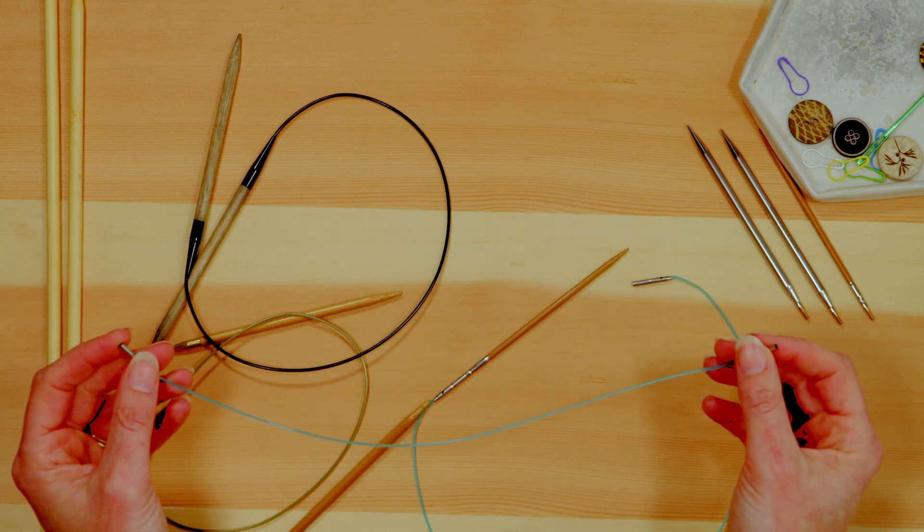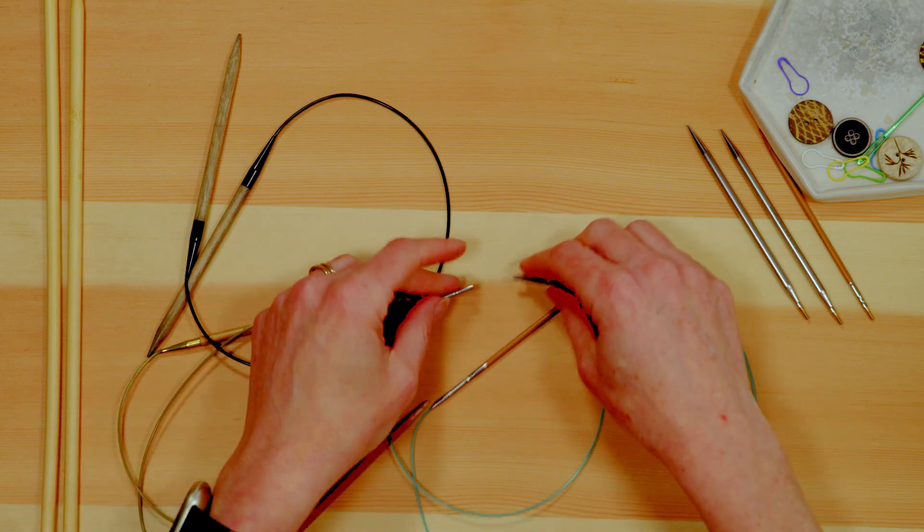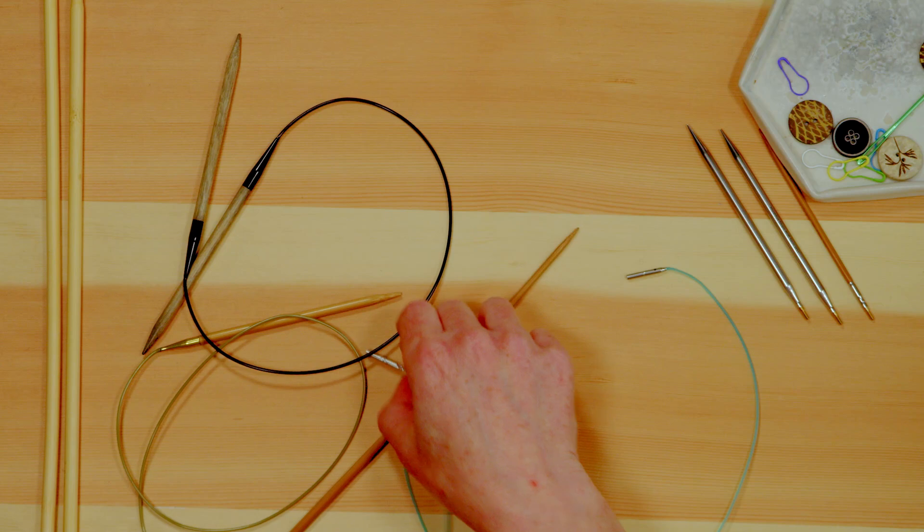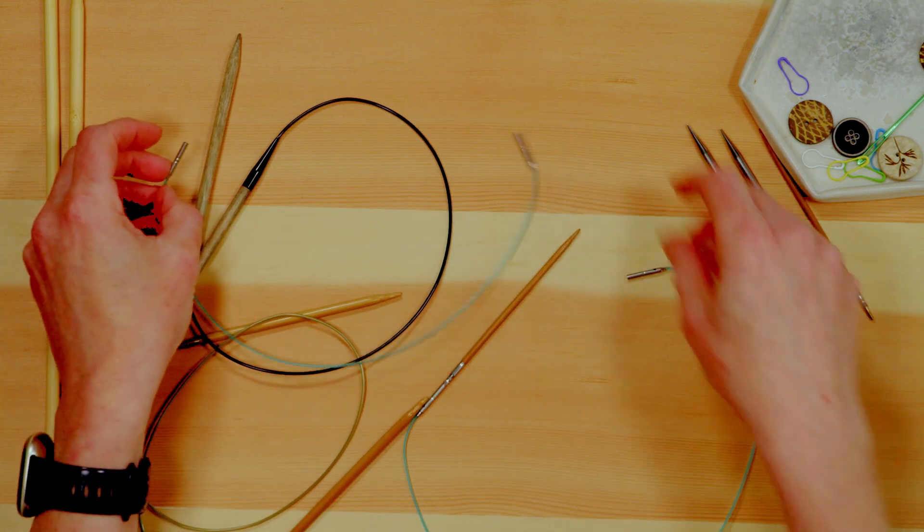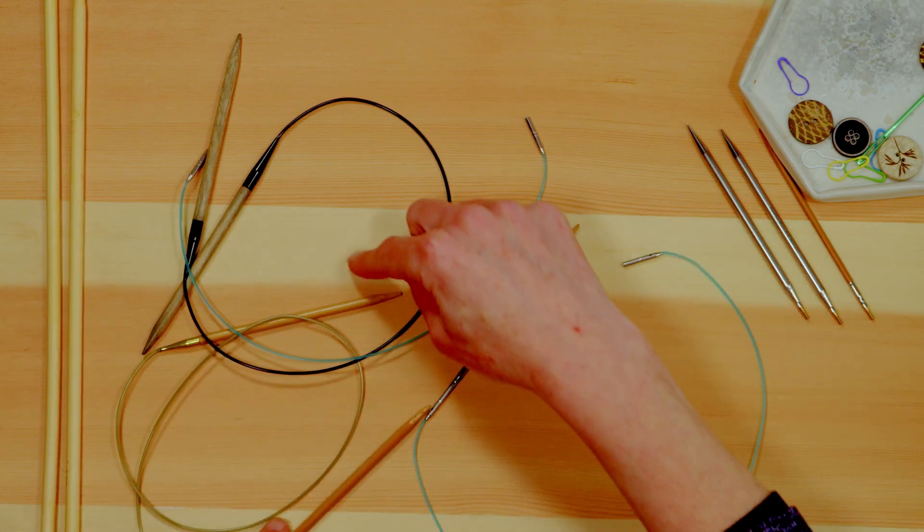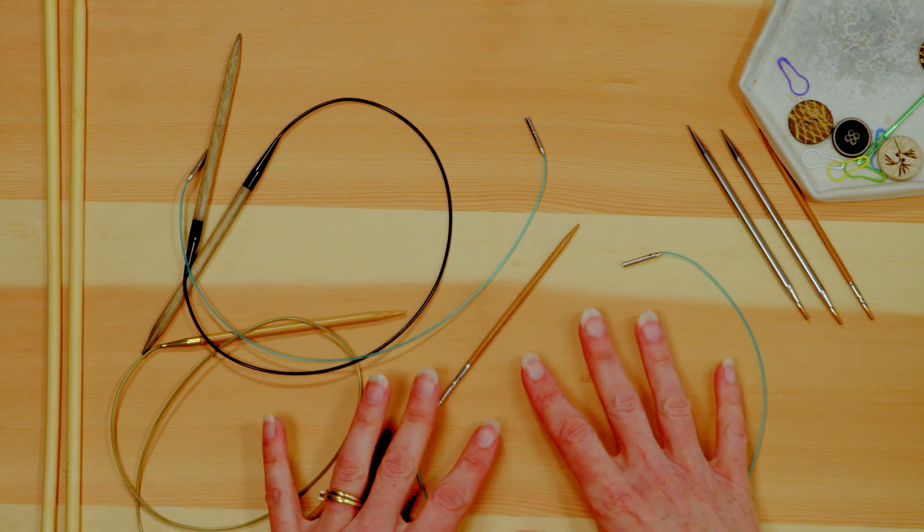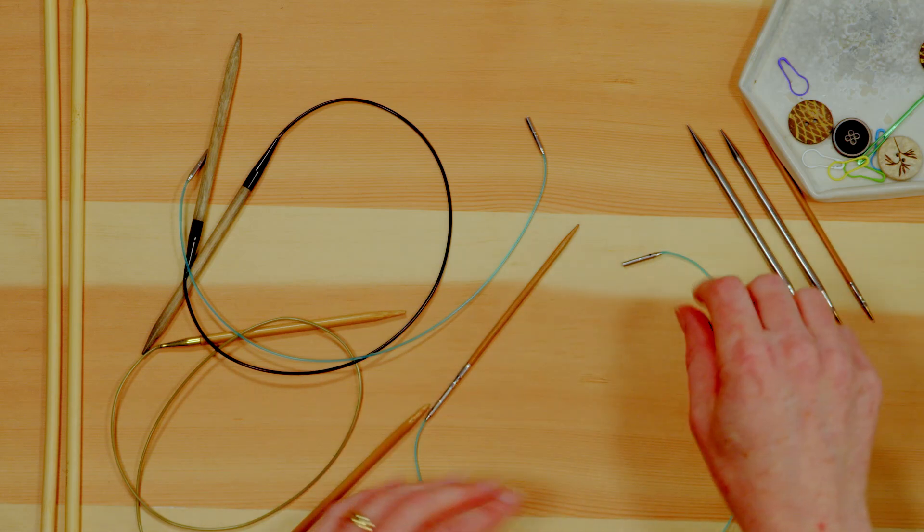So you'd pick the size of the tip you want and then you'd pick the length of the cord. So what that means is if you're working on a project and it starts out small and it gets bigger you can change from a short cord like this to a longer cord like one of these. So it means that you can match each part of your project together very easily.